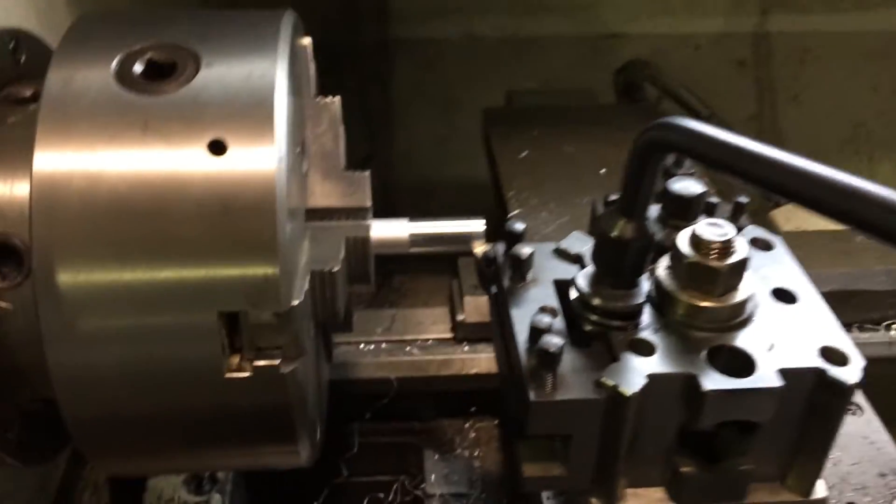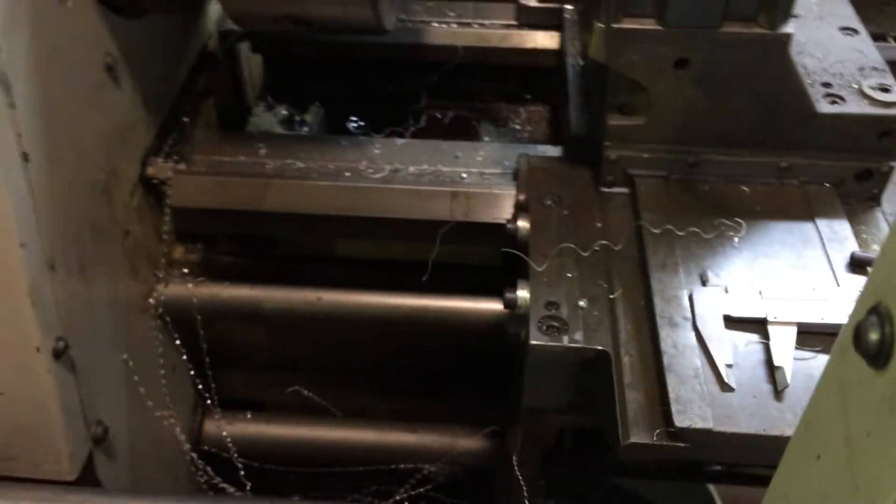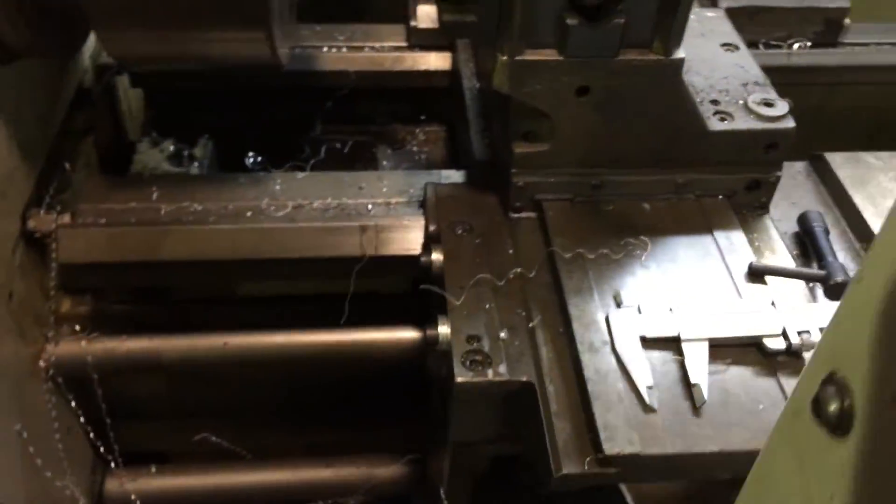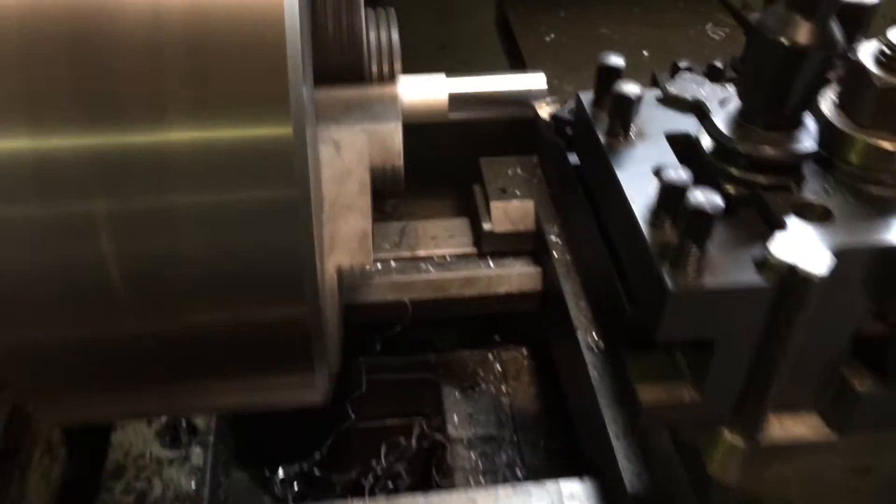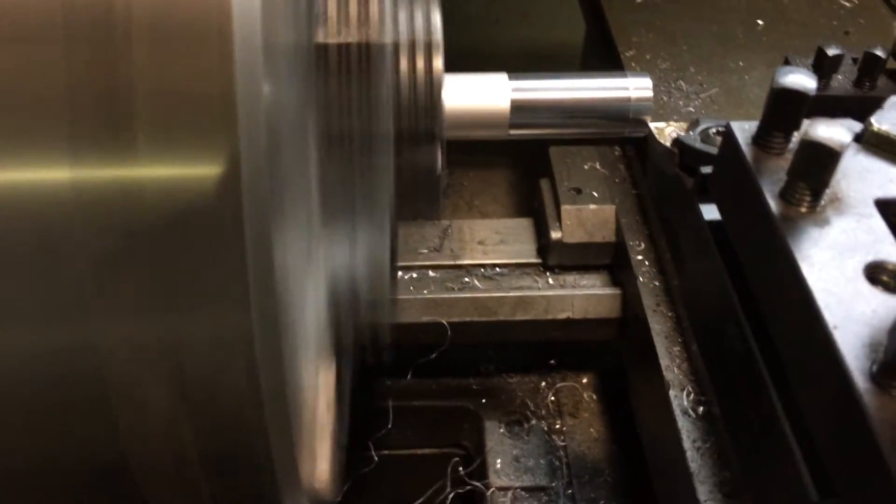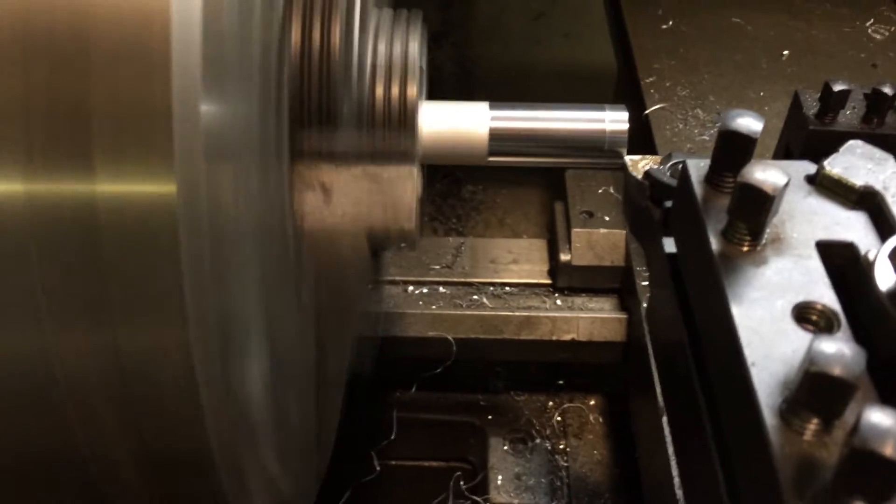Now we need to set the Z zero. Just fire up the lathe, just going to manually turn, and then turn the carriage back, and I'll take a very light facing cut.